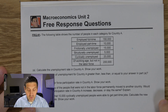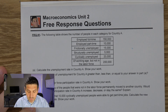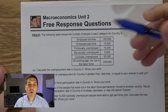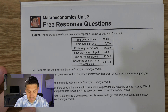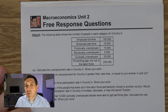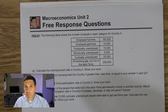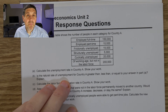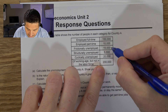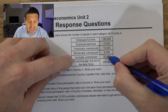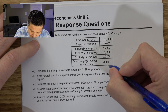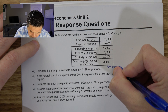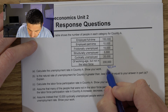The following table shows the number of people for each category for Country A. We have people who are full-time employed, part-time. We have frictional, structural, and cyclical unemployment, and of working age but not in the labor force. First, calculate the unemployment rate for Country A. We have to find the number of people who are unemployed. We can calculate that by looking at these three categories: 15, 5, and 20,000, for a grand total of 40,000 people considered unemployed.